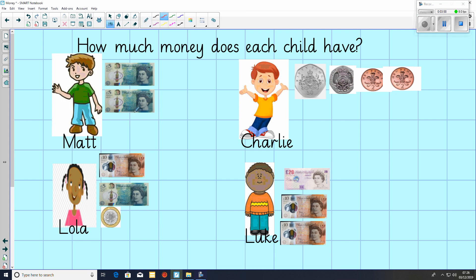Matt has got 2 £5 notes. 5 add 5 equals 10, so he has got £10. Lola has got 10 add 5 pounds, add a £2 coin. So she has got £17 altogether.